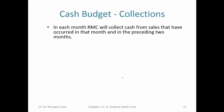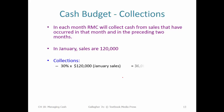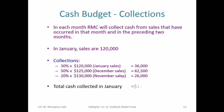Each month, the company collects cash from sales that occurred in that month and the preceding two months — based on that receivables schedule. Some people pay right now, some pay a month out, some pay two months out. That means every month we're collecting from the current month, the previous month, and two months ago. For example, January sales were $120,000 — we collect 30% in January, 50% of December sales, and 20% of November sales. That's how we establish our inflows for each month.